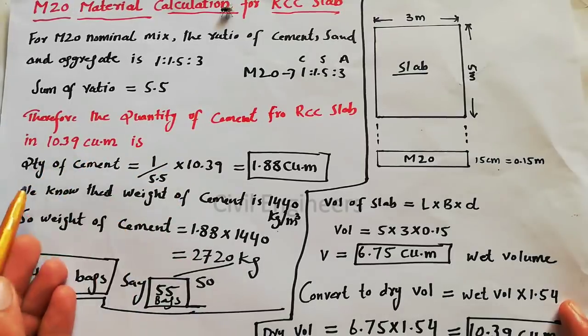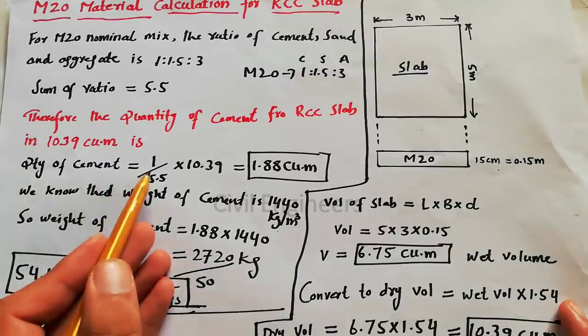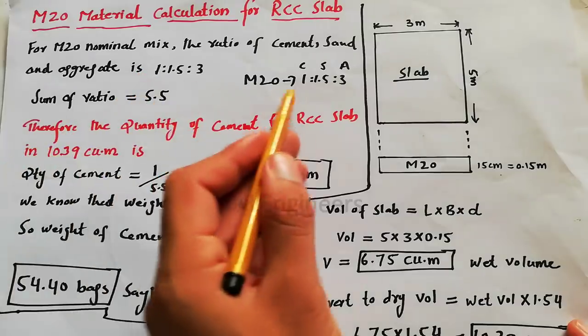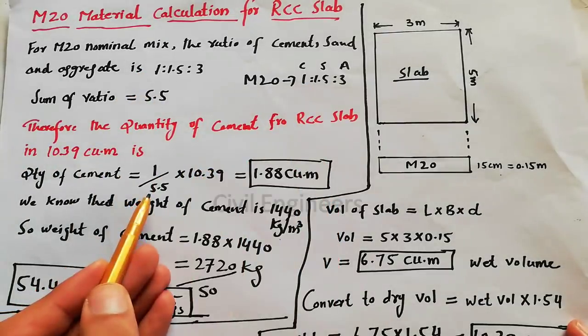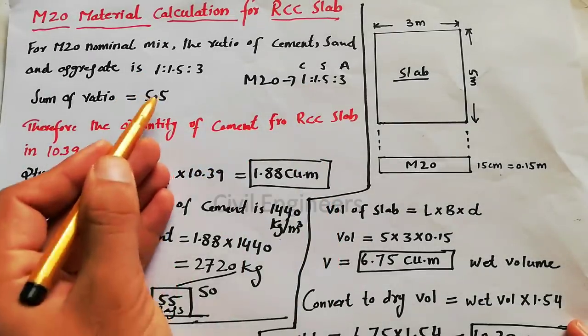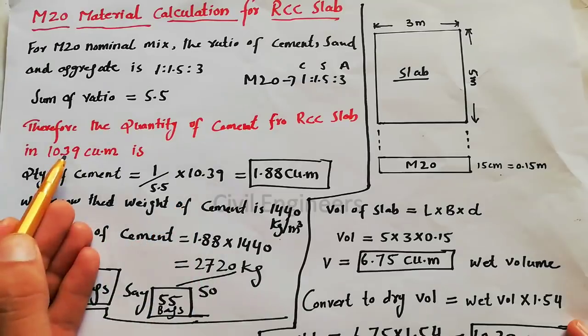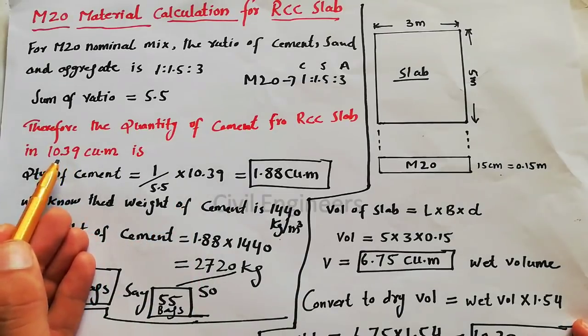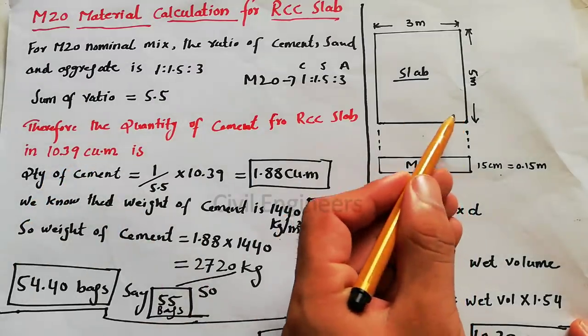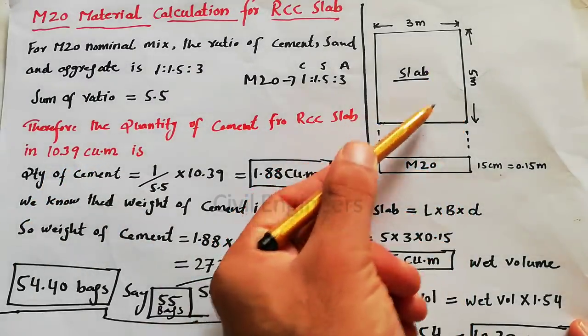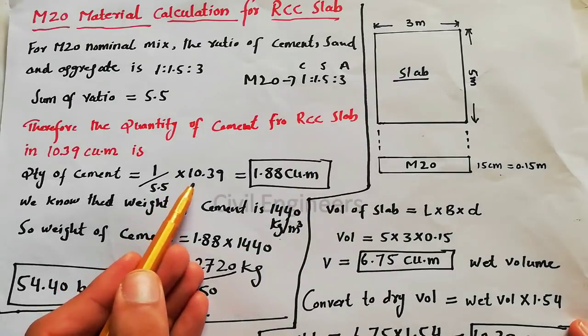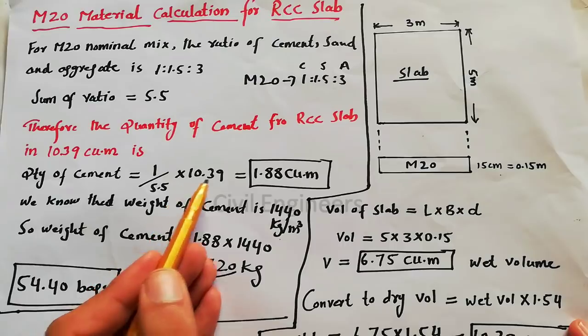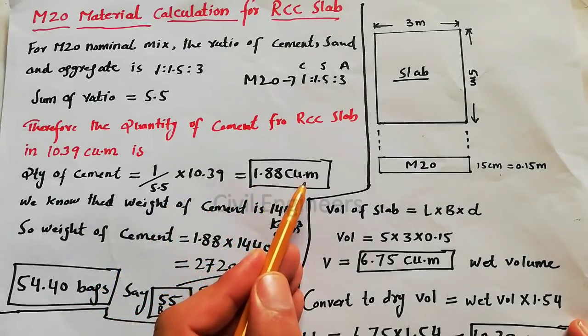We will find the material, cement, in 10.39 cubic meter. Quantity of cement equals 1 divided by 5.5. Why 1 divided by 5.5? Because 1 is the cement ratio, divided by 5.5 sum of ratio, multiply 10.39. We will find cement quantity in 10.39 cubic meter because we will find cement in this RCC slab. So multiply 10.39. When you do calculation for this, it gives us 1.88 cubic meter.